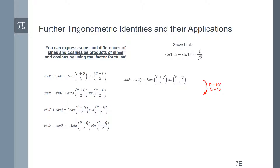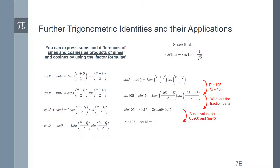If p is 105 and q is 15, then that's the same as 2 cos((105+15)/2) sine((105-15)/2), which simplifies to 2 cos(60°) sine(45°). Since we've memorised those values, we substitute in: 2 × (1/2) × (1/√2), which simplifies to 1/√2. That is the type of working out you need to show in any exam answer.